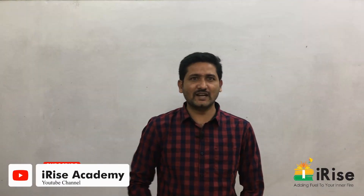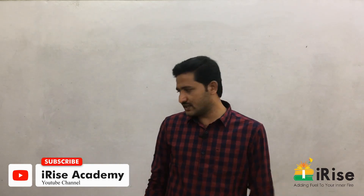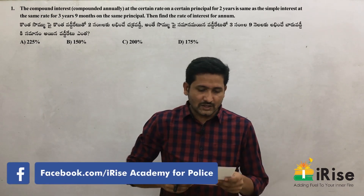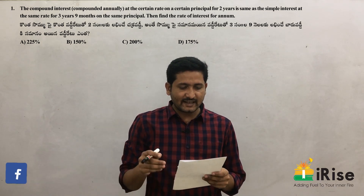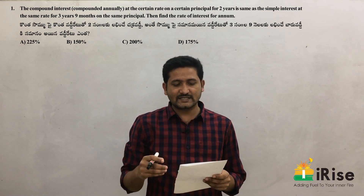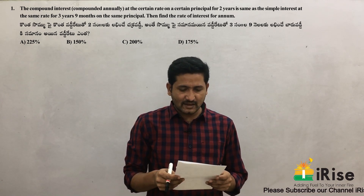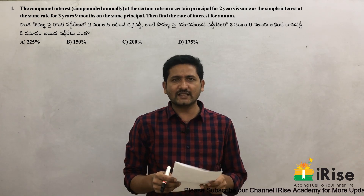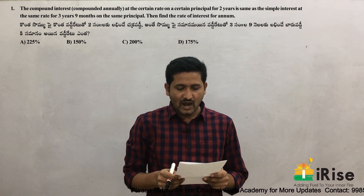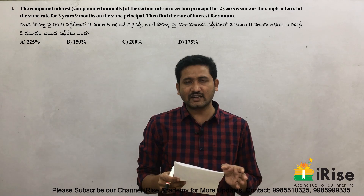Hello friends, welcome to iRise Academy. Today's question is: the compound interest compounded annually at a certain rate on a certain principal for two years is the same as the simple interest at the same rate for three years nine months on the same principal. Find the rate of interest per annum.